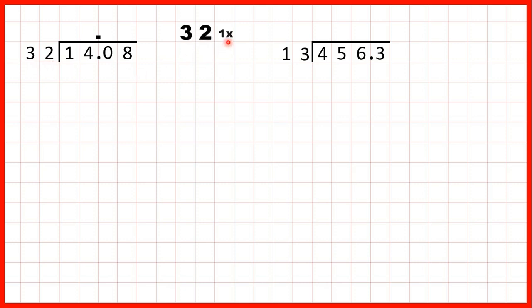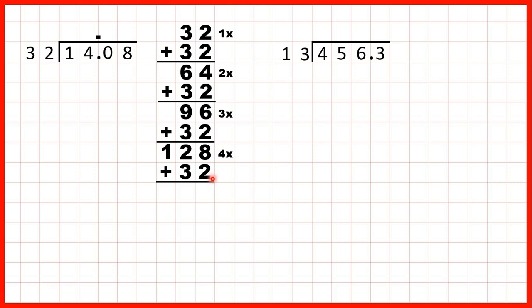32 is obviously 1 times 32, but if we add another 32, we get 64. So that must be 2 times 32. Adding another 32 gives us 96 for 3 times. If we add another 32, we get 128 for 4 times. And adding another 32, 8 plus 2 is 10, so 1, 0.